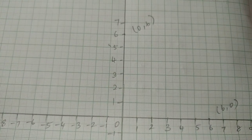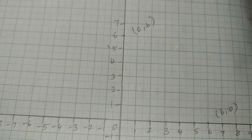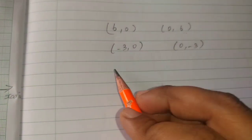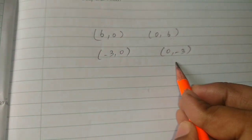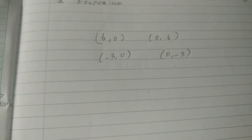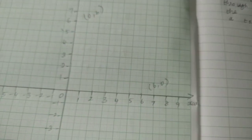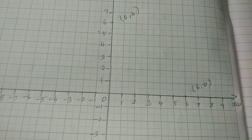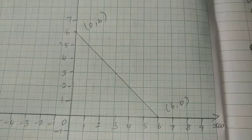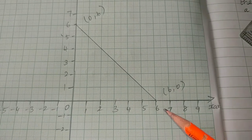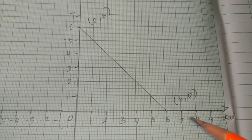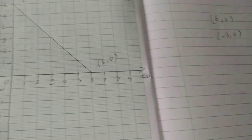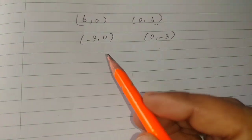First, I am going to join these two points — (6,0) and (0,6). I am going to join them and start the set, then come to join them.